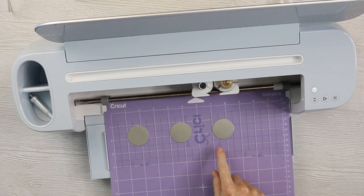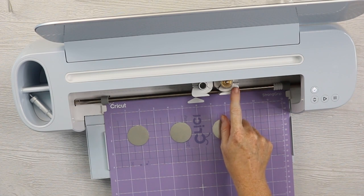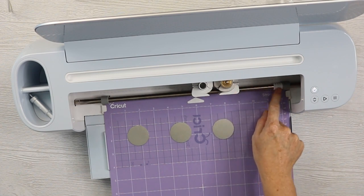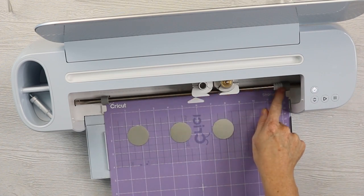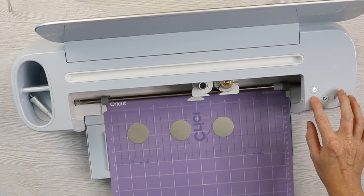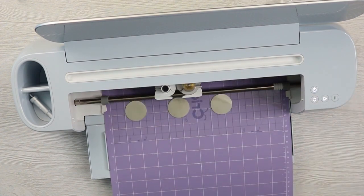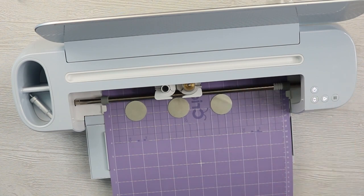Now that everything's located on my mat and in design space, I've added my engraving tip with the quick swap housing to the clamp. And I've moved my white star wheels all the way over to the right. So move all the star wheels over to the right. And then we just want to click the load unload to load our mat. And then once that's loaded, we'll just click the go button to start the engraving.